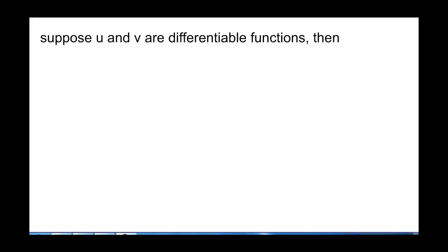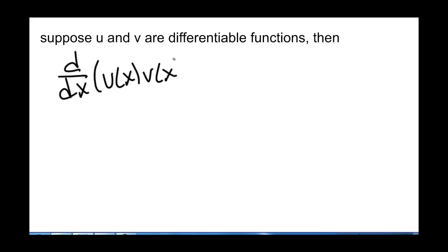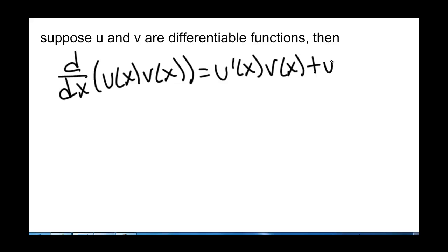Suppose u and v are differentiable functions. Then the derivative with respect to x of u(x) times v(x) is given by the product rule to be u'(x) times v(x) plus u(x) times v'(x). Remember that's the derivative of the first function times the second function, plus the first function times the derivative of the second function.